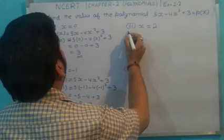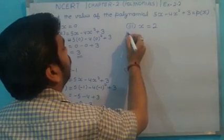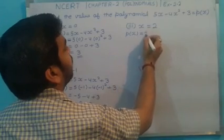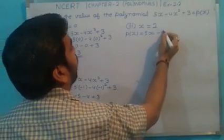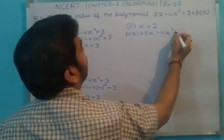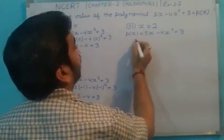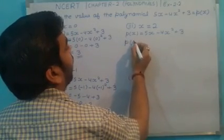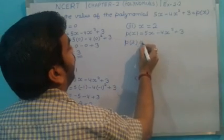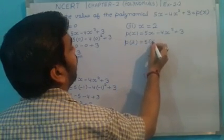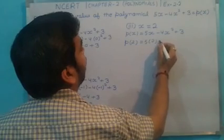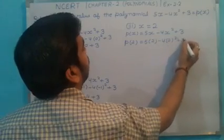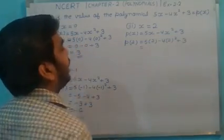We are going to take the third value. p(x) = same function: 5x - 4x² + 3. Now we have to calculate this polynomial at x = 2. Put the value of x = 2 at every place where we have x.